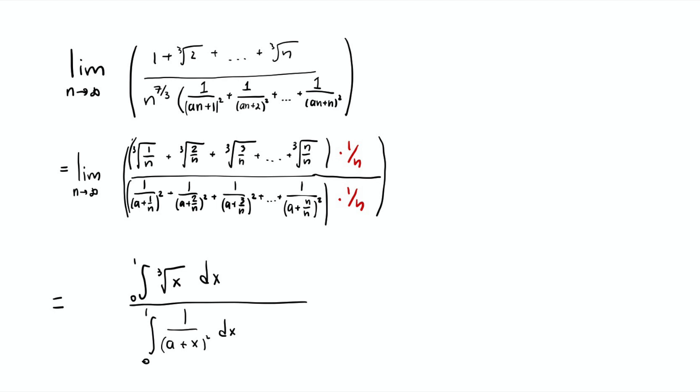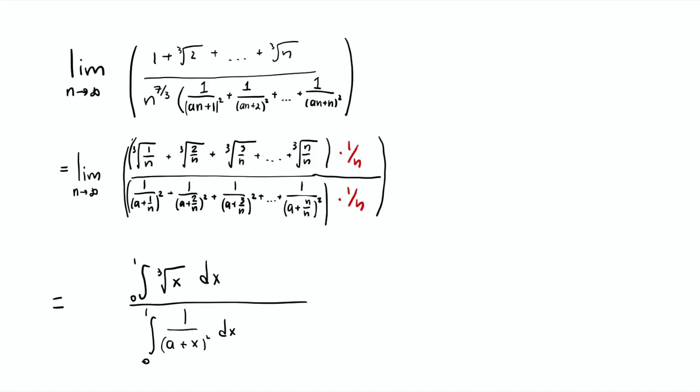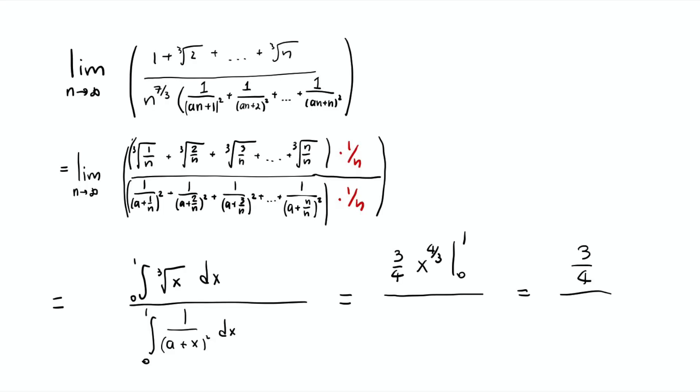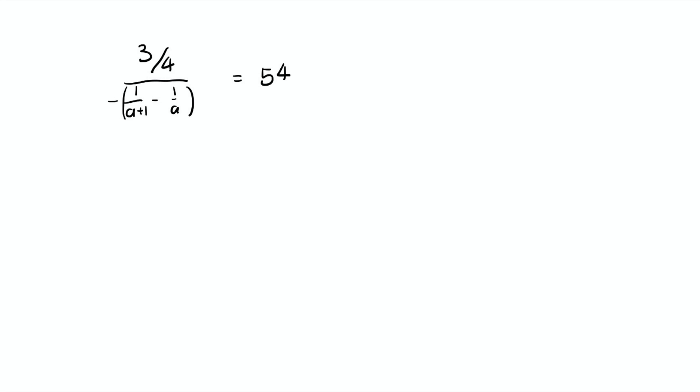After this, it's pretty straightforward if you know calculus. The antiderivative of cube root of x becomes x to the 4 over 3 multiplied by 3 over 4. You plug in 0 and 1. 1 makes it 1, 0 makes it 0, so we just get 3 over 4. The bottom: the antiderivative of 1 over a plus x squared will become minus 1 plus a over x. Plug in 0 and 1, you get 1 over a plus 1 minus 1 over a, and everything you have a minus sign in front. So at the end of the day, you set that whole thing equal to 54. After a little bit of simplification, you have 1 over 72 equal to 1 over a times a plus 1.